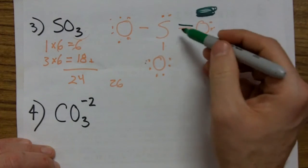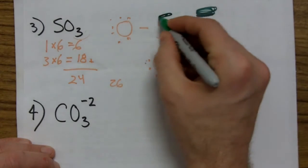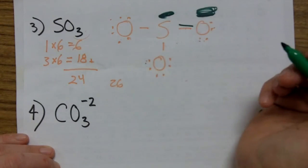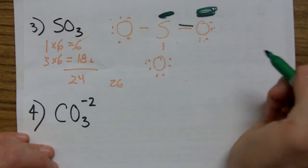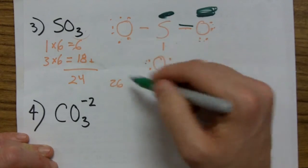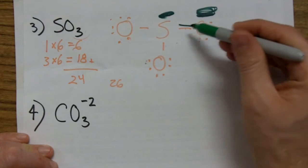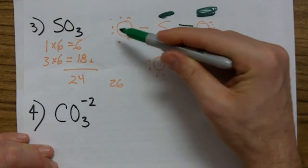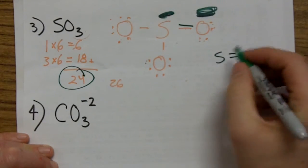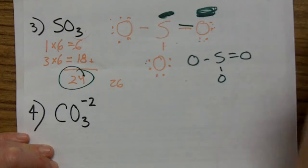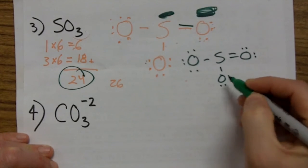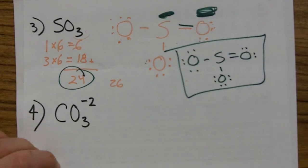Anytime you put in a double bond, you cross off a lone pair from each of the two atoms double bonding and add an extra dash in the middle. Now if we count: this oxygen has two, four, six, eight; sulfur has two, four, six, eight; and the other two oxygens are unchanged. Counting the total: two, four, six, eight, ten, twelve, fourteen, sixteen, eighteen, twenty, twenty-two, twenty-four — the right total. So the answer is: double bond to one O, single bond to an O, single bond to an O, with everyone else having eight valence electrons. That is SO₃.